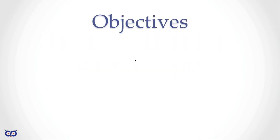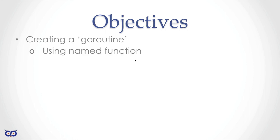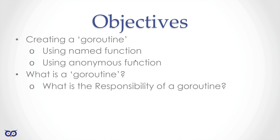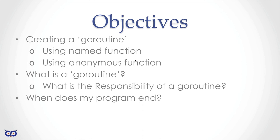Our objectives for this lecture are to cover how to create GoRoutines using named functions and anonymous functions, which are the functions that you create without names. We'll also figure out what a GoRoutine is by trying to understand the responsibility of a GoRoutine. Then we're going to talk about how your program ends. We said that your program ends when main ends. Now we're creating GoRoutines, so it's time to understand the consequences of your program ending when you have GoRoutines.